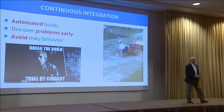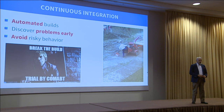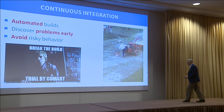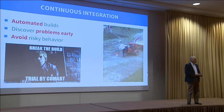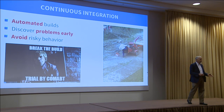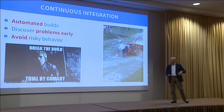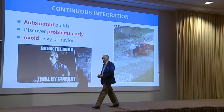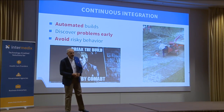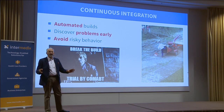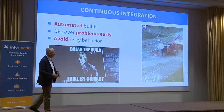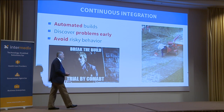Continuous integration — I can remember doing it in the 1980s; we wrote our own code because there weren't any tools, but it was the process. Automated builds are absolutely essential. If your build is a multi-part process with 85 steps involving several different people, you're doing it wrong. There's got to be a way to automate it. It allows you to discover problems early. On a project I ran, I gave the person who broke the build a silly hat and they had to wear it the whole day. It was okay to break the build; if you did it a lot, we had a long conversation about your future. It also avoids risky behavior.